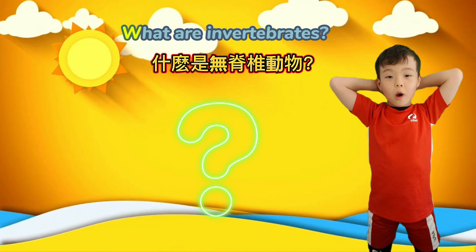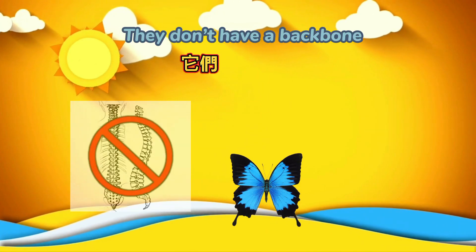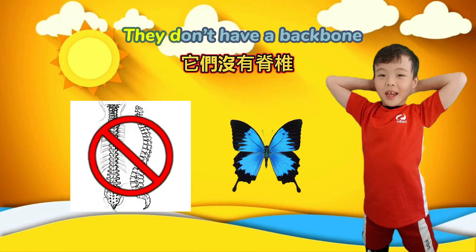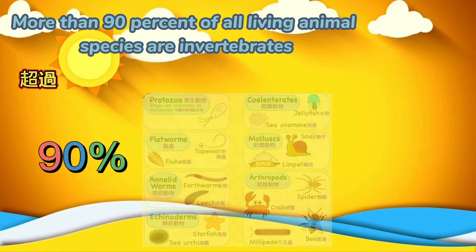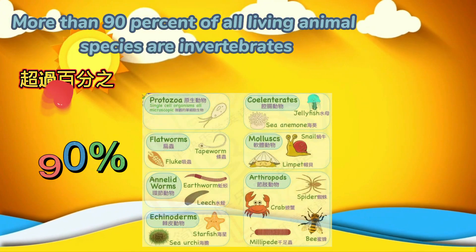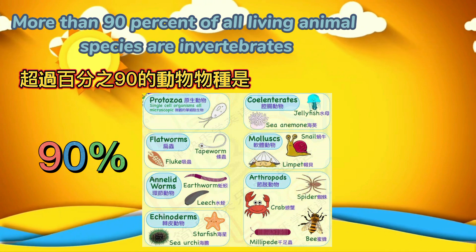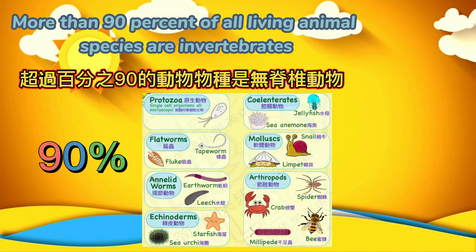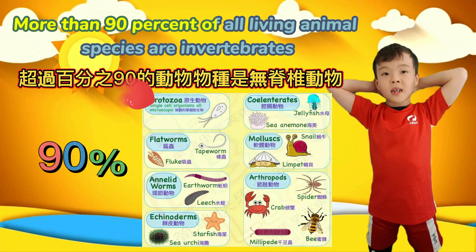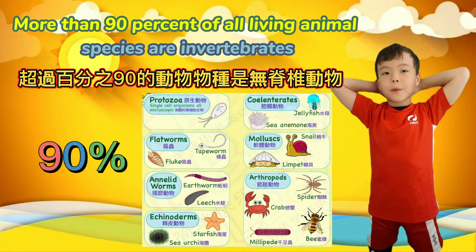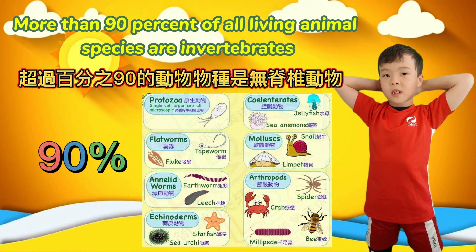What are invertebrates? They don't have backbones. More than 90% of all living animal species are invertebrates.